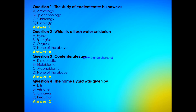Which is a freshwater cnidarian — Hydra, Spongilla, Dugesia, or none of the above? The answer is A, that is Hydra. Next question: Coelenterates are diploblastic, triploblastic, monoblastic, or none of the above? The answer is A, that is diploblastic.